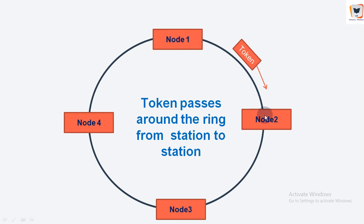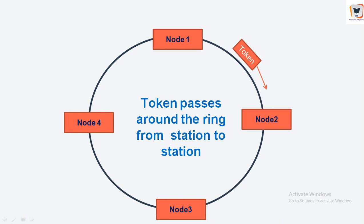If node 2 wishes to transmit, it captures the token, holds it while transmitting all its frames, then releases the token. The token meanders around in a circular fashion: node 1 sends the token to node 2, node 2 to node 3, node N back to node 1. When a node receives the token, it holds it only if it has frames to transmit; otherwise it immediately forwards the token to the next node. If a node does have frames to transmit, it sends up to a maximum number and then forwards the token.